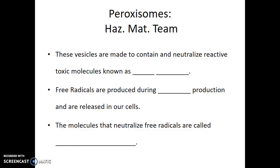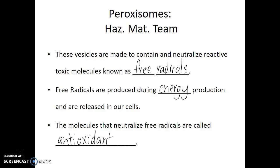Peroxisomes are vesicles made to contain and neutralize reactive toxic molecules known as free radicals. Free radicals are produced in our cells during energy production. If allowed to remain in the cell, they could be damaging because they are highly reactive. Peroxisomes neutralize these free radicals using molecules called antioxidants. You may have heard of antioxidants as something we get from foods or supplements, but it turns out our cells produce antioxidants as well to help in our own defense.